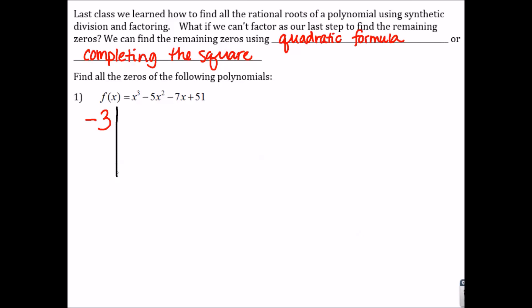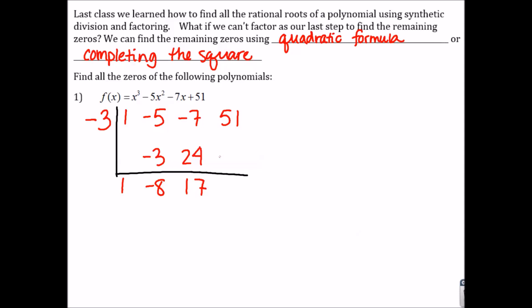I'll draw my L for synthetic division and write in the coefficients. Then I'll just do synthetic division: bring down the 1, multiply, add, multiply, add, multiply, and add. We ended up with a remainder of 0, which is what we want. Now, if I write out the quadratic, we have x squared minus 8x plus 17.